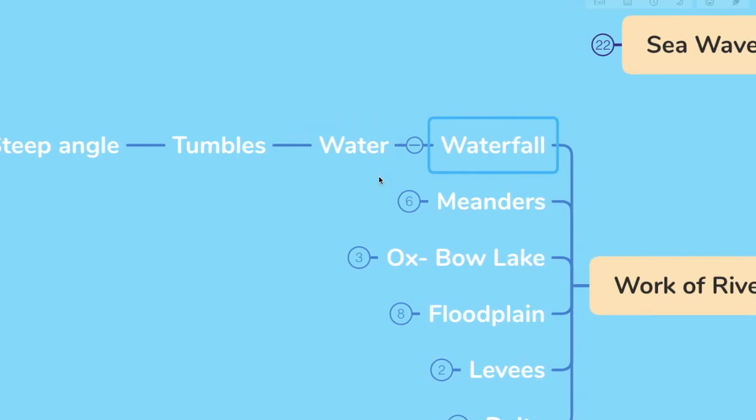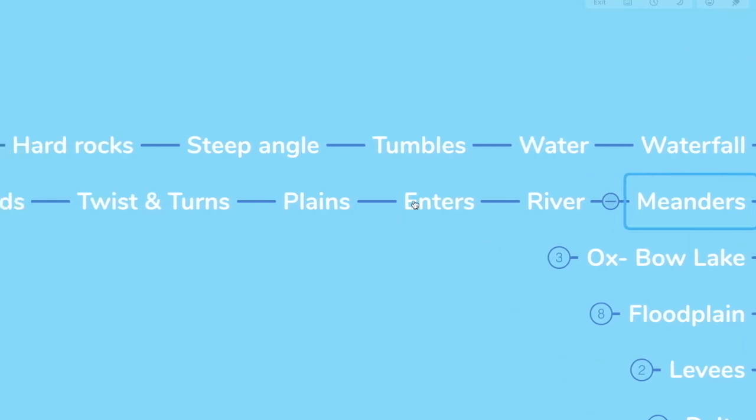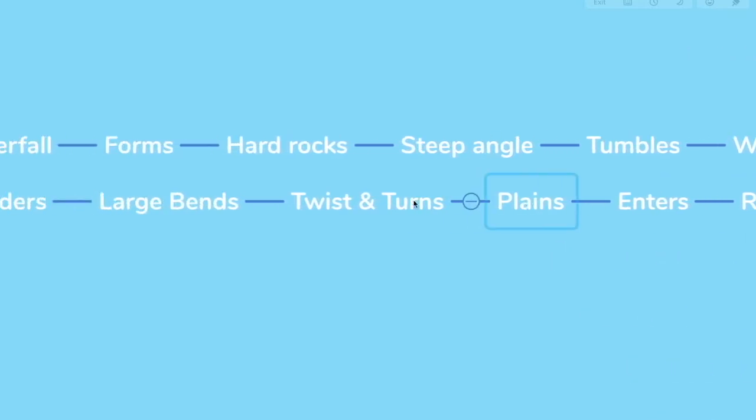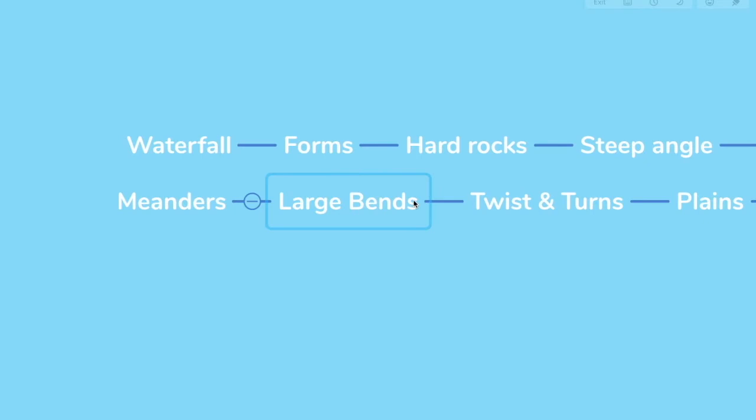Next, we have meanders. As the river enters the plain, it twists and turns, forming large bends. These are called meanders.